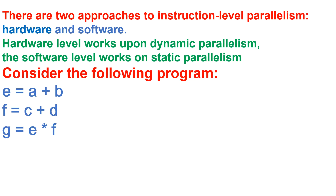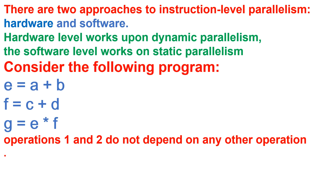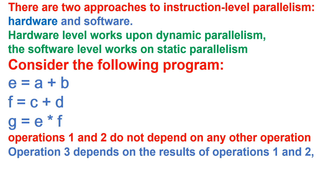But the third statement depends on the first and second operations. The third statement is doing the multiplication of e and f, where the value of e is coming from the first statement and the value of f is coming from the second statement. So the third statement depends on both the first and second statements.